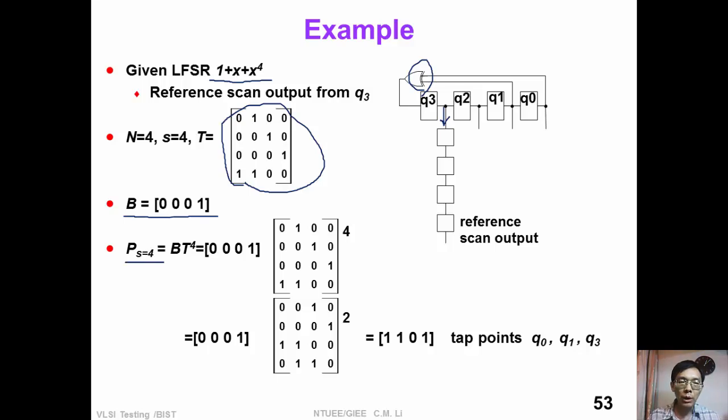Now if we want to design a phase shifter with S equal to 4, we need to multiply B by T to the power of 4, which can be B times this vector to the power of 2, which is equal to 1 1 0 1. That means we are taking the tap point from Q0, Q1 and Q3. So this is the design of the phase shifter.